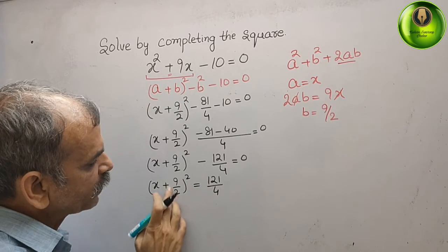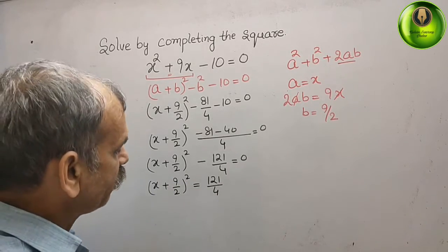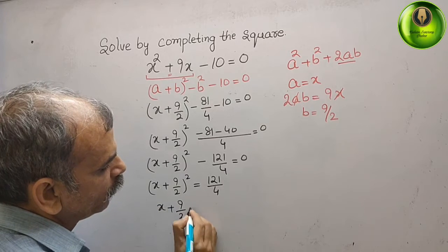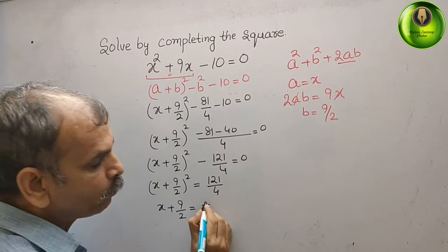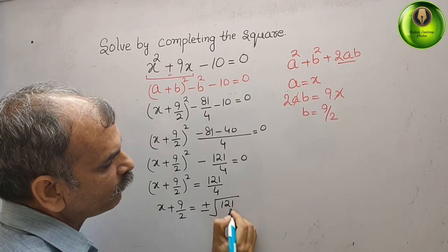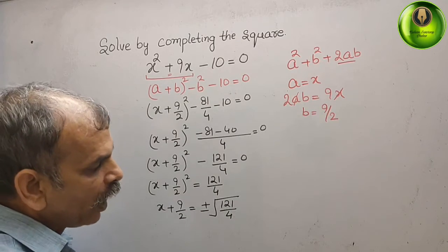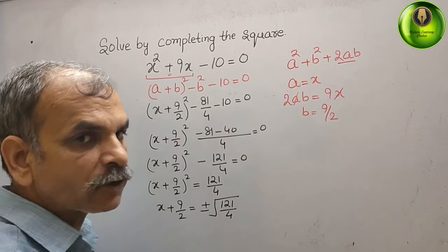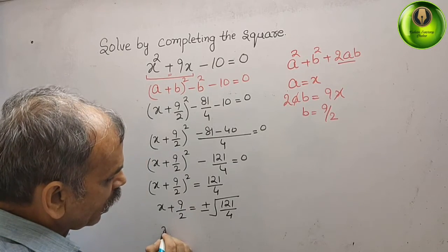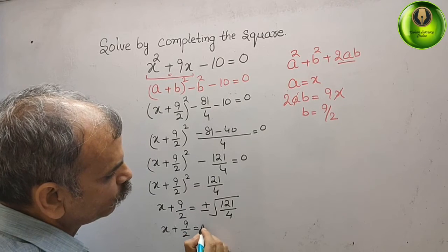If (x + 9/2) whole square equals 121 by 4, then x + 9/2 equals plus or minus the square root of 121 by 4. Now 121 is the perfect square of 11, and 4 is the perfect square of 2. So x + 9/2 equals plus or minus 11 by 2.